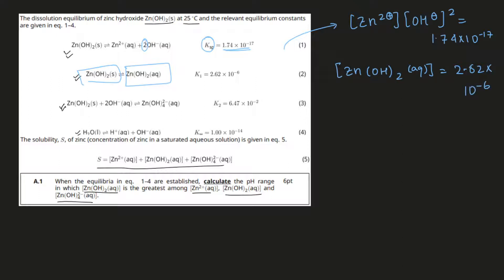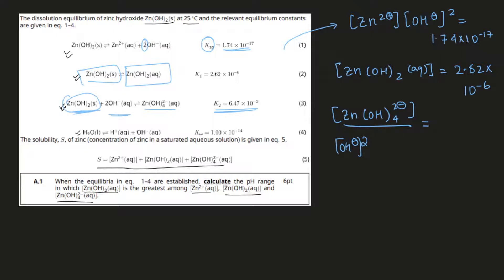The next equilibrium: we again have a solid, so we don't need to take care of it. The equilibrium constant can be written as [Zn(OH)₄²⁻] divided by [OH⁻]², and the activity of the solid is just equal to 1, so it doesn't factor in. This is equal to 6.47 × 10⁻².